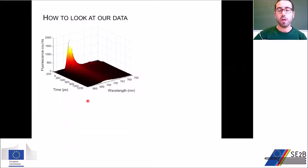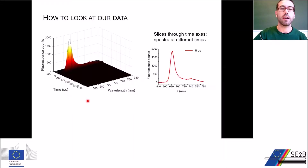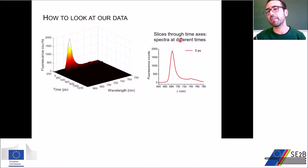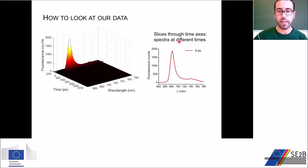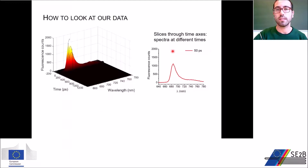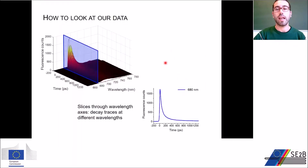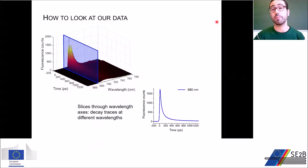As the signal decays, it shifts to longer wavelengths. Looking in more detail, if we take a slice at constant time, we see the fluorescent spectrum emitted at that specific time. For instance, at time zero the spectrum peaks at around 680 nanometers, but then as time goes by, fluorescence decays and also moves to longer wavelengths. Another way of looking at the data is to take slices along the wavelength at constant wavelength, and to look at the fluorescence emission trace at that specific wavelength.